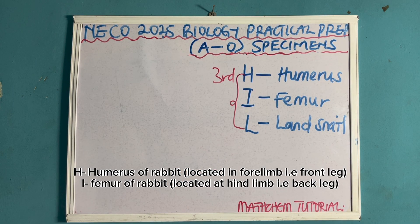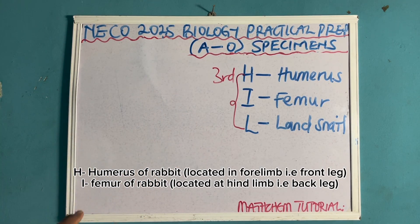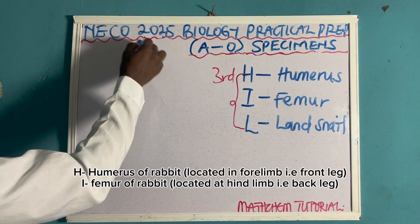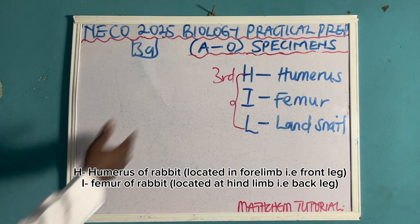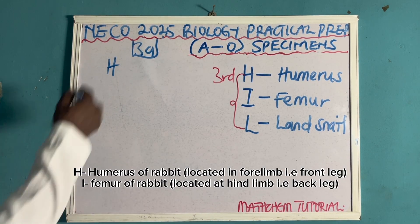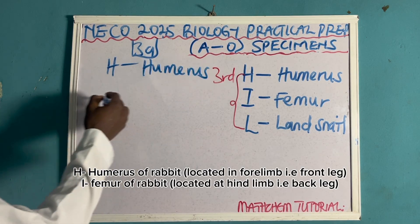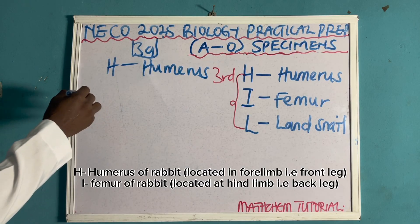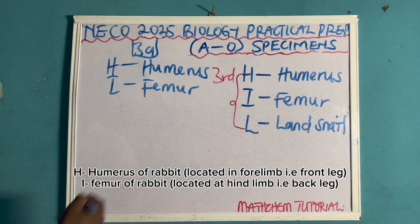Now let's go into possible questions they can ask you in this third category — specimens H, I, and L. Question 3A: they can ask you to identify specimen H and I. Specimen H is the humerus, and specimen I is the femur.